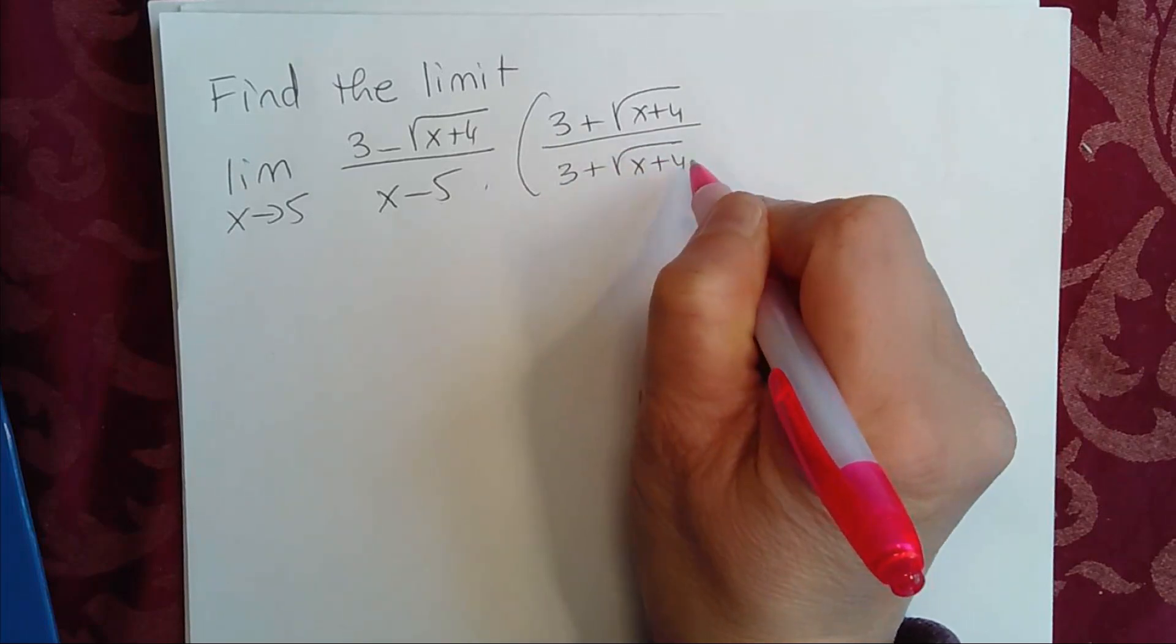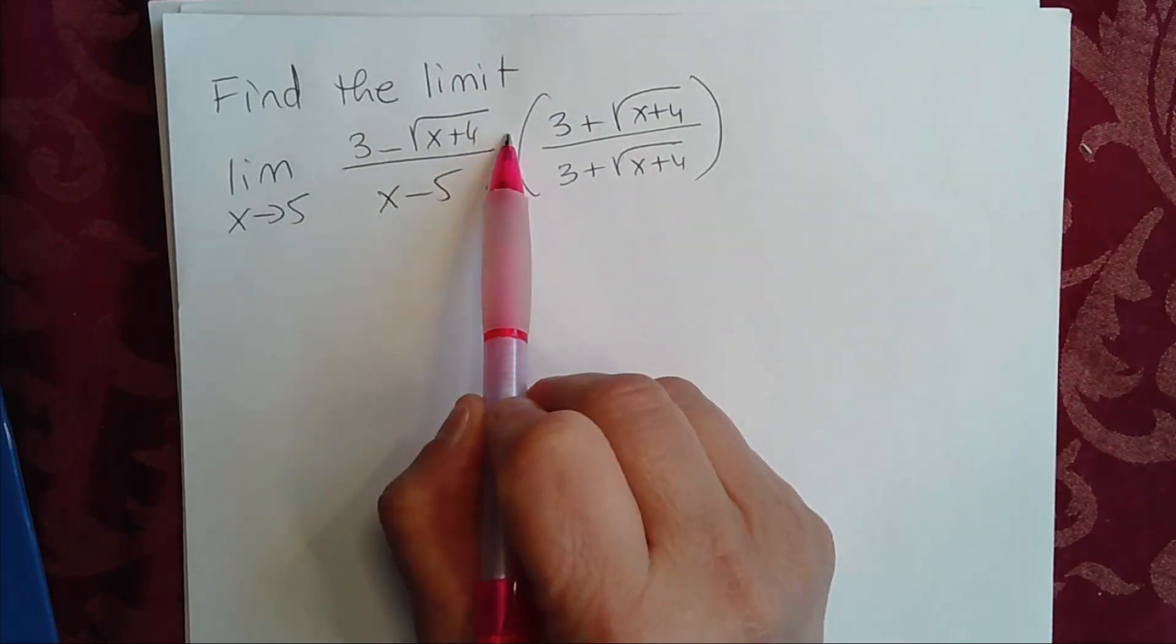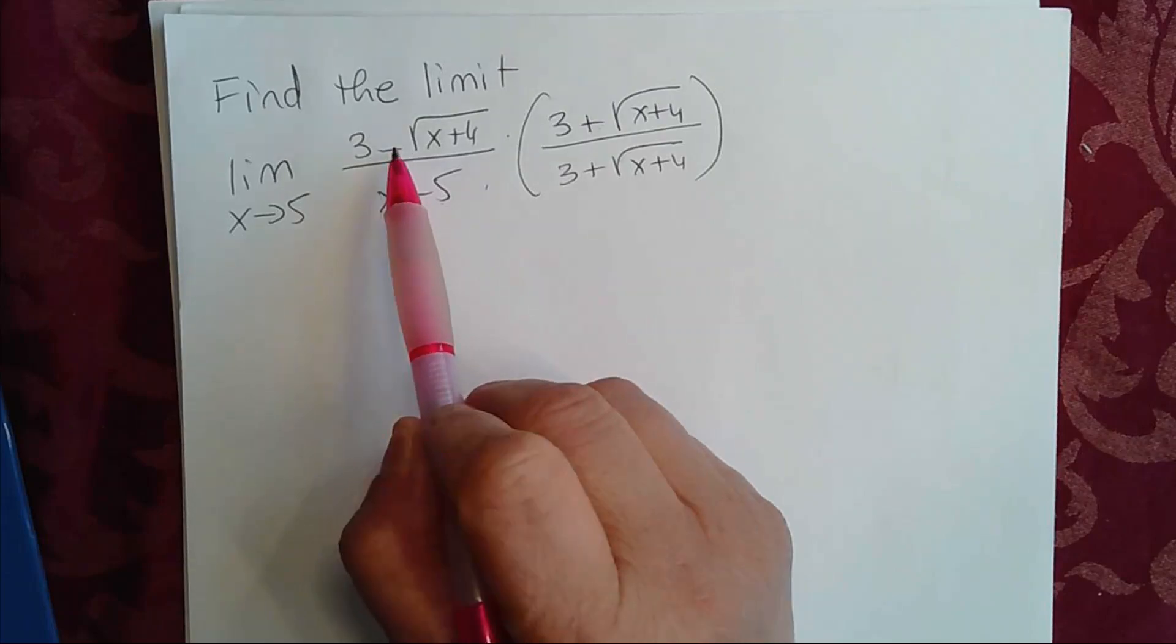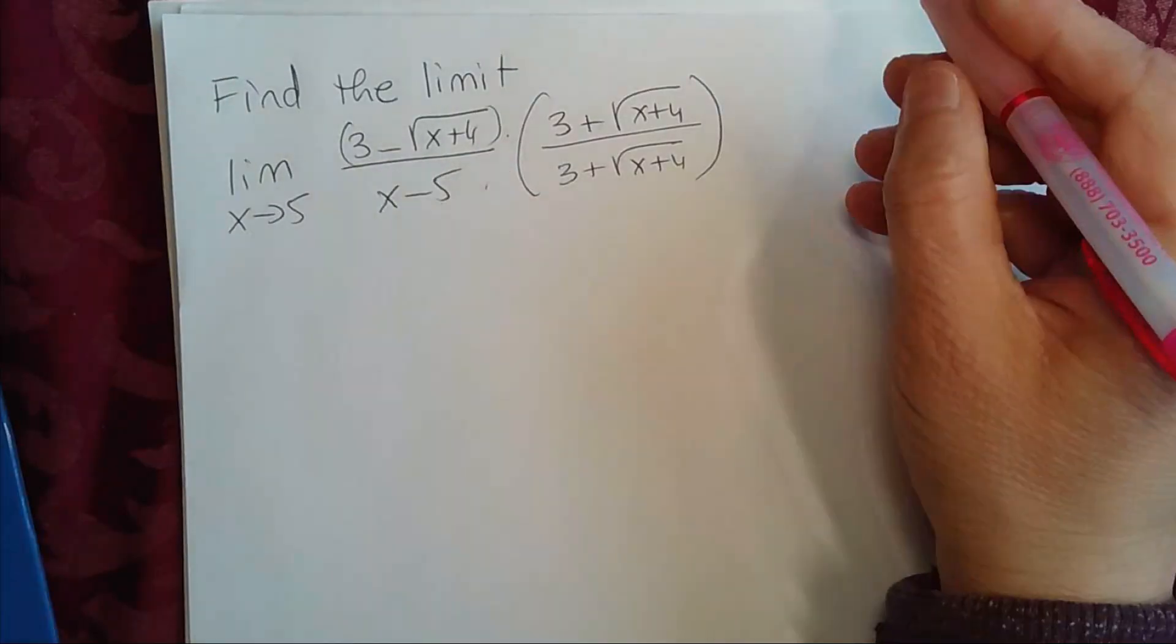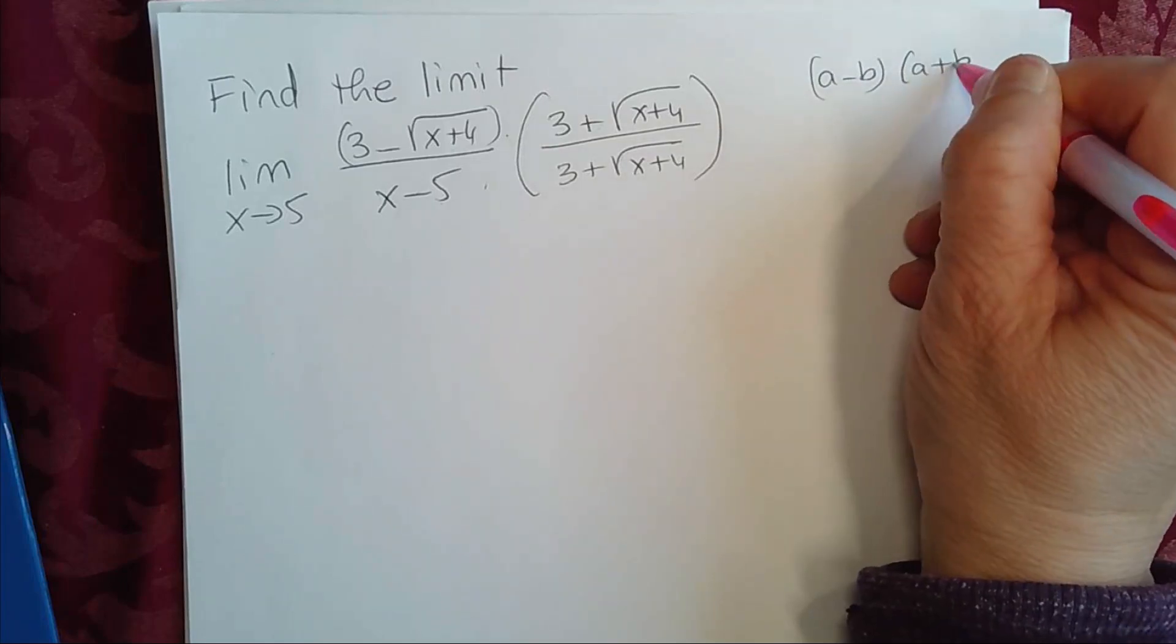Okay, now here in the numerator, we have the product of the sum and difference of two terms. Now, if you recall, a minus b times a plus b is equal to a squared minus b squared.